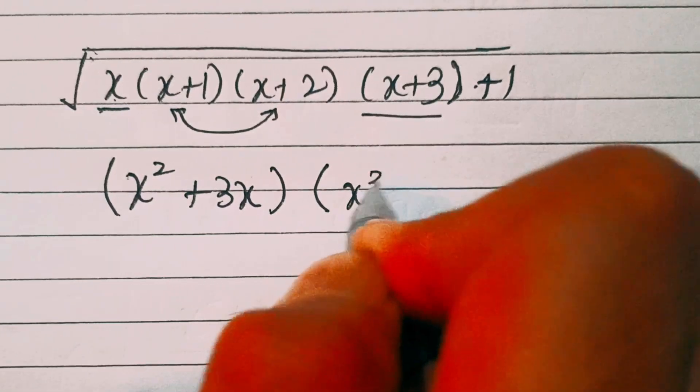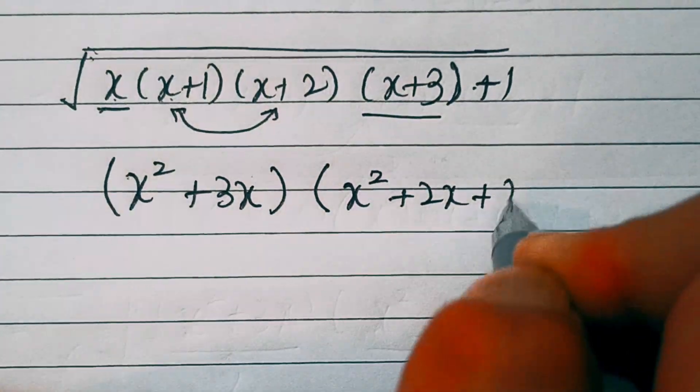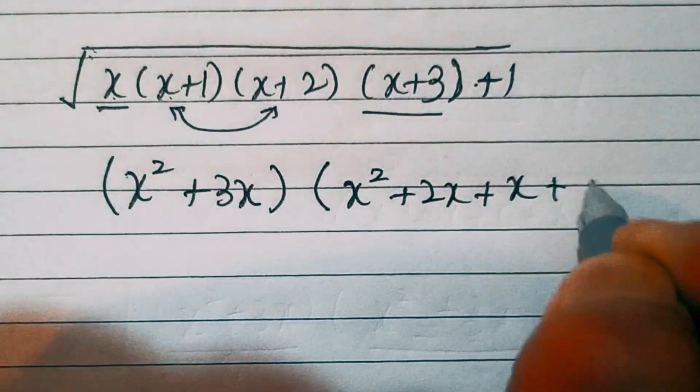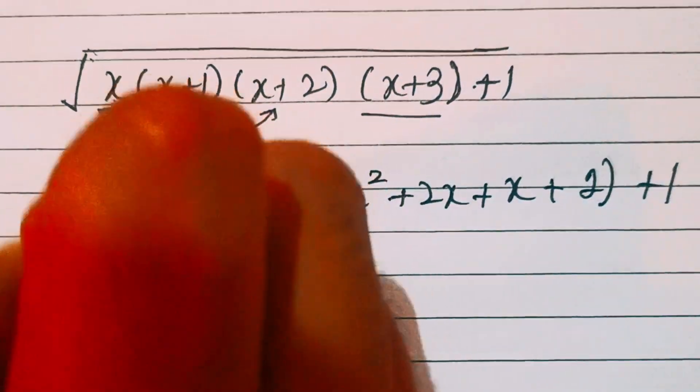Multiply by x into x is x squared, x into 2 is 2x, then 1 into x is x, plus 1 into 2 is 2, plus 1, whole square root.